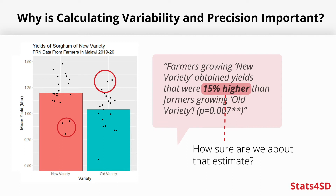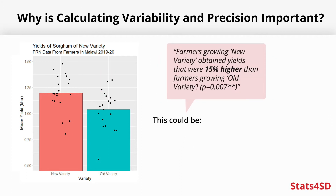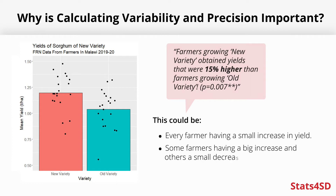Would it have still been 15%? This 15% and the p-value — it's not that it is incorrect, it's just missing a little bit of context. Thinking about that 15% increase: is that a mixture of every farmer having a small increase? Or do some farmers have a really big increase and other farmers have a slight decrease? These are two very different scenarios which can both get to that 15% figure.